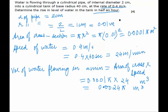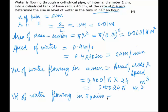Since we have to find the volume for half an hour, and half an hour means 30 minutes, the volume of water flowing in 30 minutes will be 30 times what was flowing in 1 minute. So 30 into 0.00245 gives us 0.0725 meters cubed.